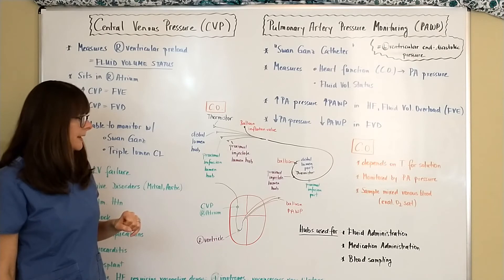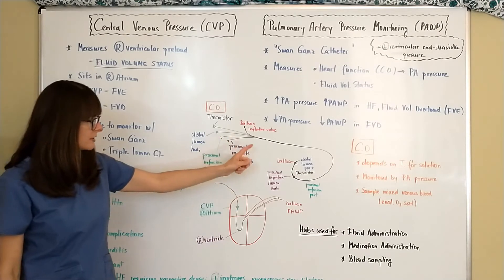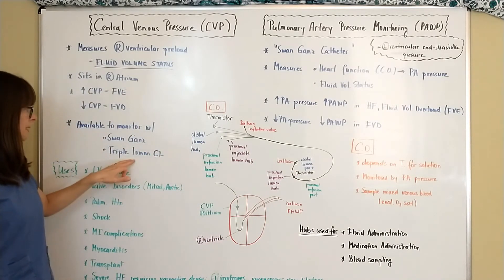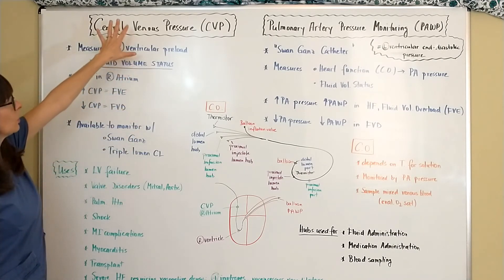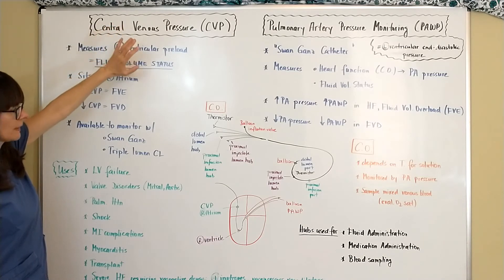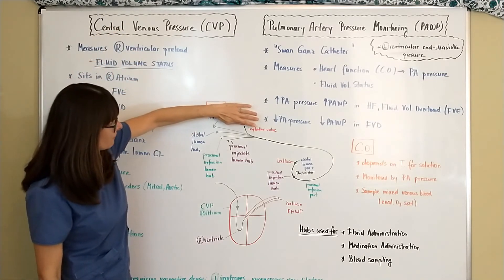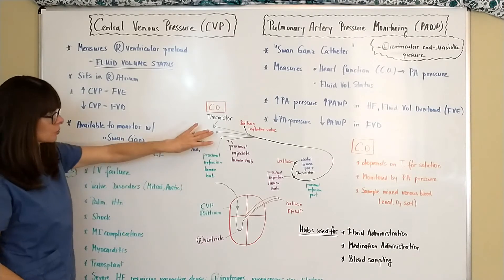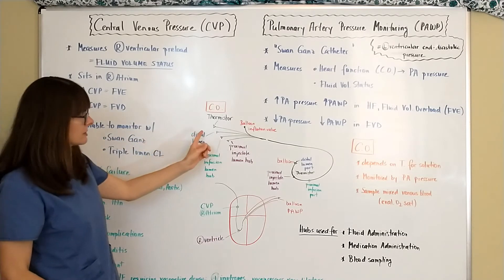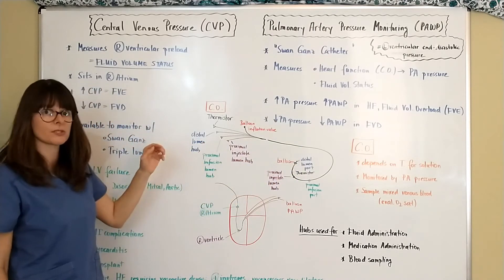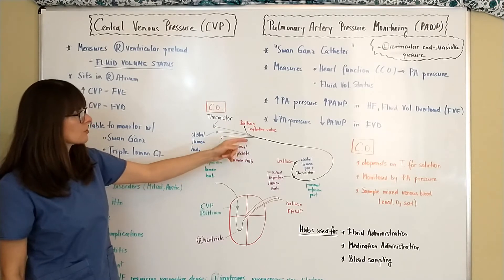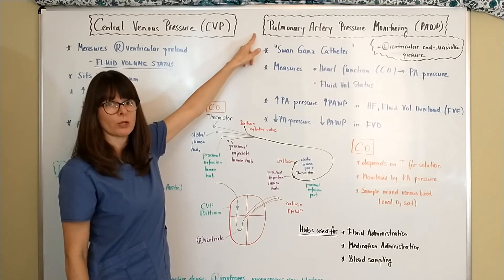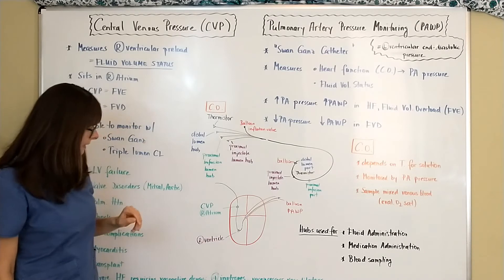If this were not a Swan-Ganz catheter but simply a triple lumen central line that only measures central venous pressure, we would not have the thermistor or the balloon inflation valve — just the three hubs, hence the name 'triple lumen central line.' The Swan-Ganz catheter has three lumens plus the additional thermistor and balloon inflation valve, which allows us to monitor the pulmonary artery pressure and wedge pressure.